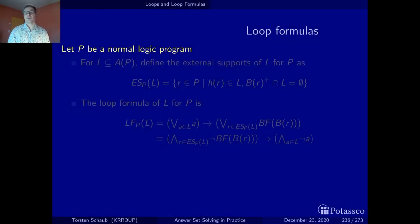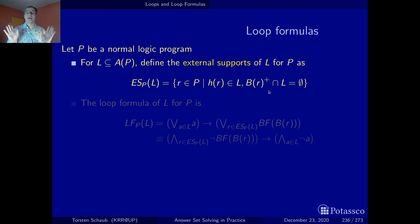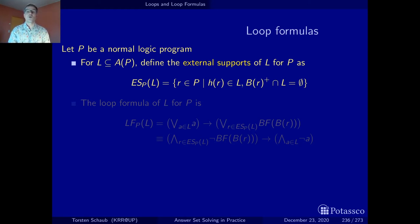The external support is defined loop-wise. We take a loop and define its external support as the set of all rules in the program whose head belongs to the loop, but whose positive body literals are disjoint from the loop — hence not involved in the circularities of the loop. This is the external support of a loop: a set of rules that support the loop but are not involved in its circularity. With this, we can define loop formulas.